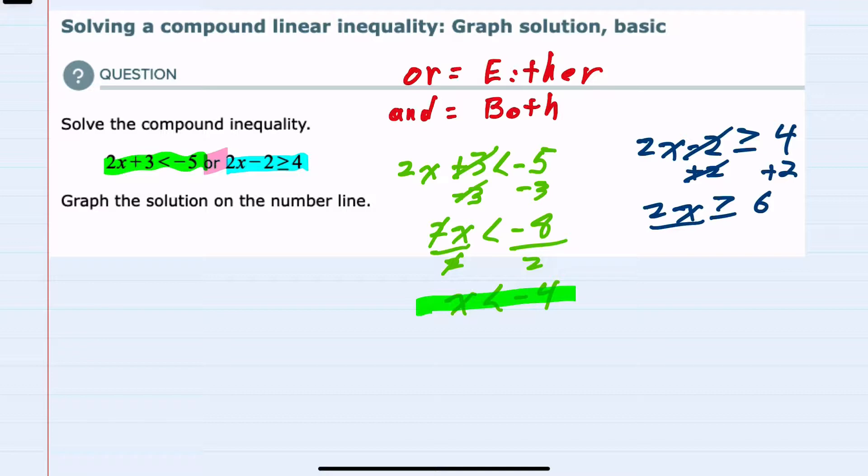And then to isolate the x, I'll divide both sides by 2. x is greater than or equal to 3. That's our simplified second inequality. Again, the direction of the inequality stayed the same because I never multiplied or divided by a negative.